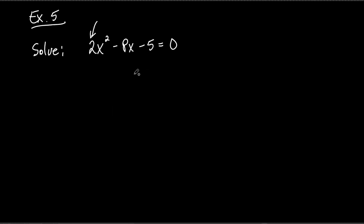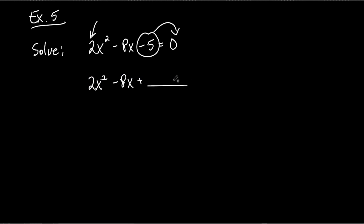Here's the order I would do it: first, take that five and chuck it to the other side before we get rid of the two. So I'm going to write 2x² + blank — remember that blank because we're completing the square — equals... now we chuck the five over, so we get a positive five because to get rid of minus five you add five. That's our first step — the easiest step by far.